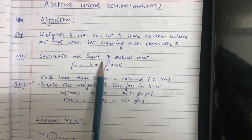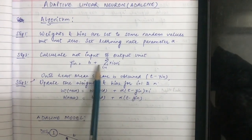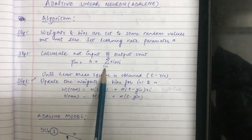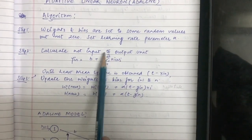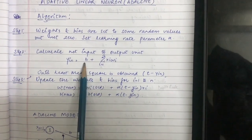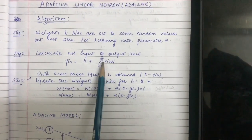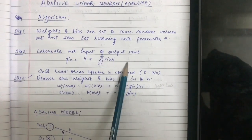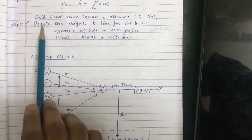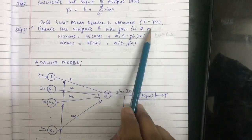Step two is to calculate the net input to the output unit. y_in is equal to b plus sigma(x_i * w_i) for i equal to 1 to n, where n is the number of input neurons and b is the bias, w indicates the weights, and x the input vectors.